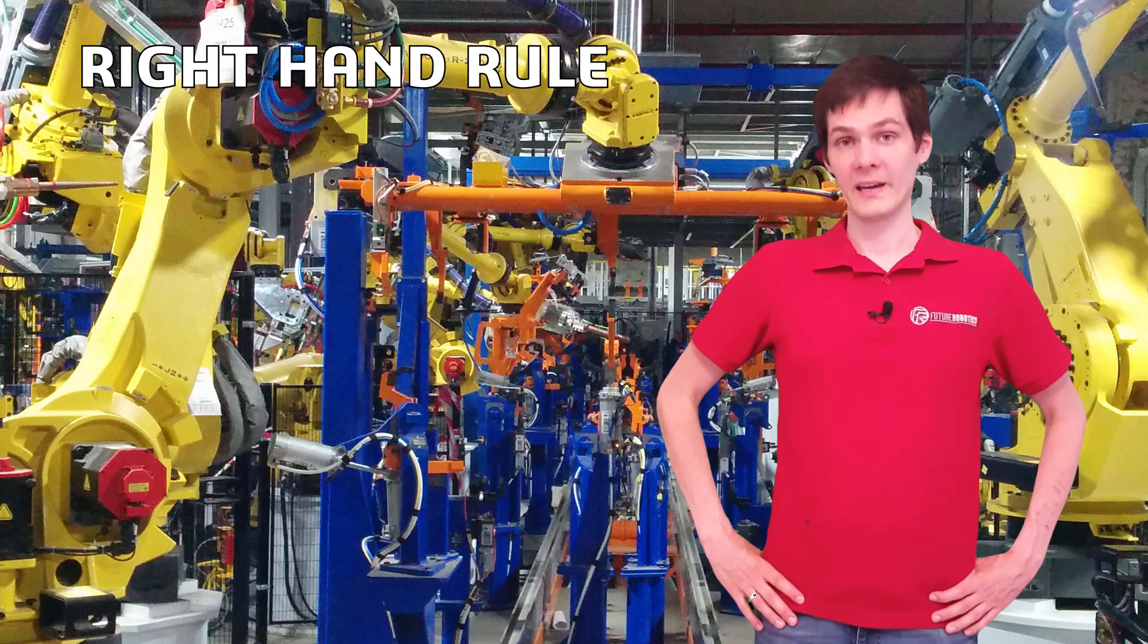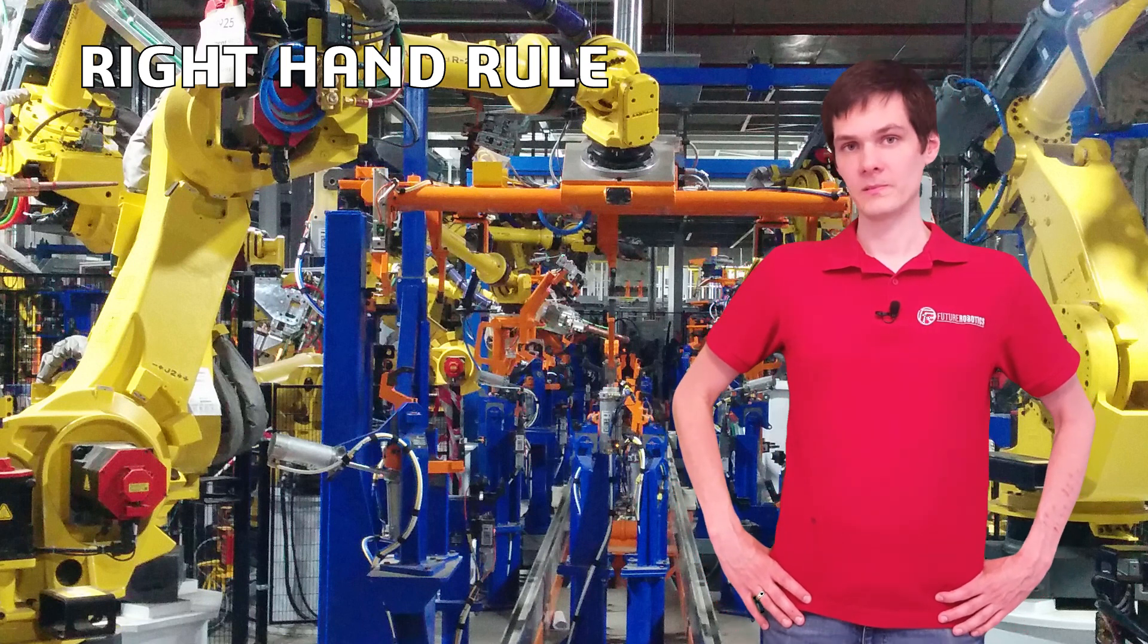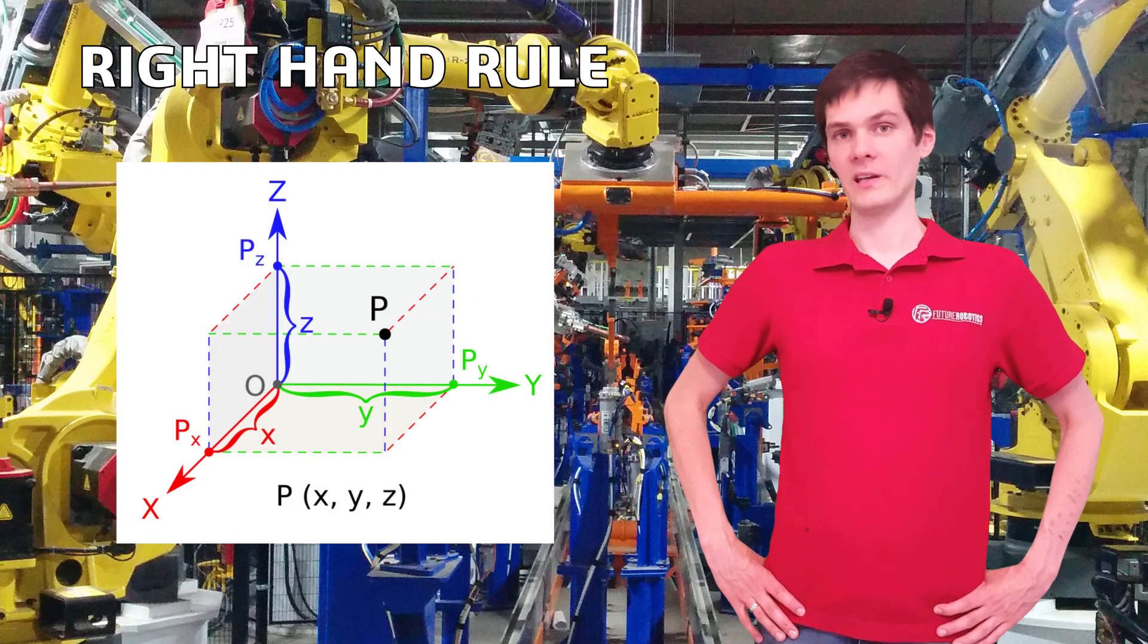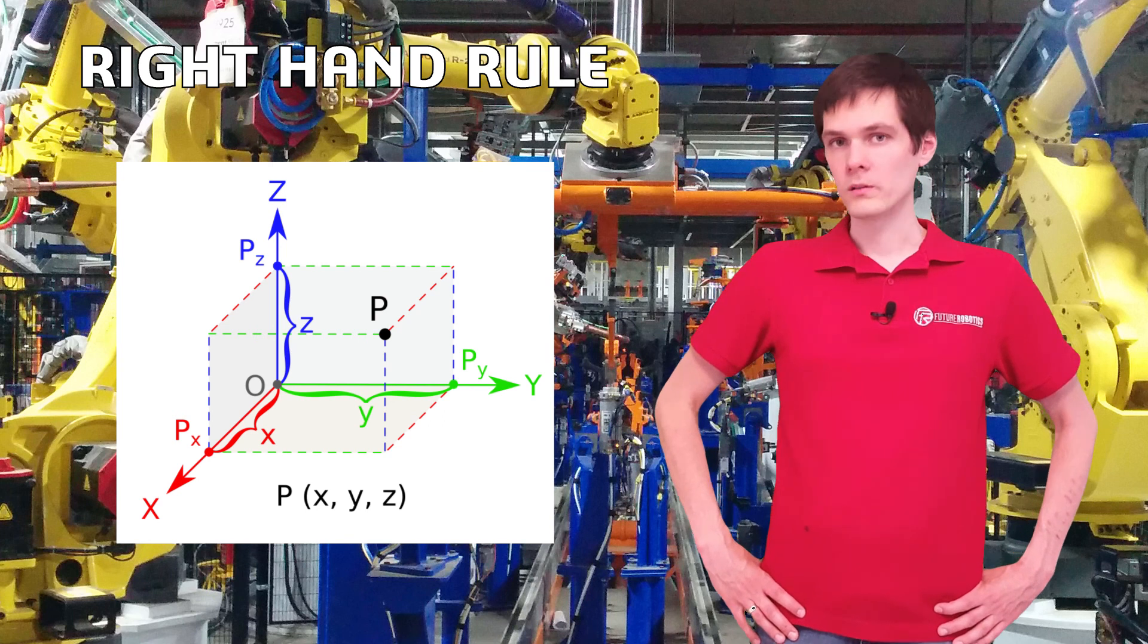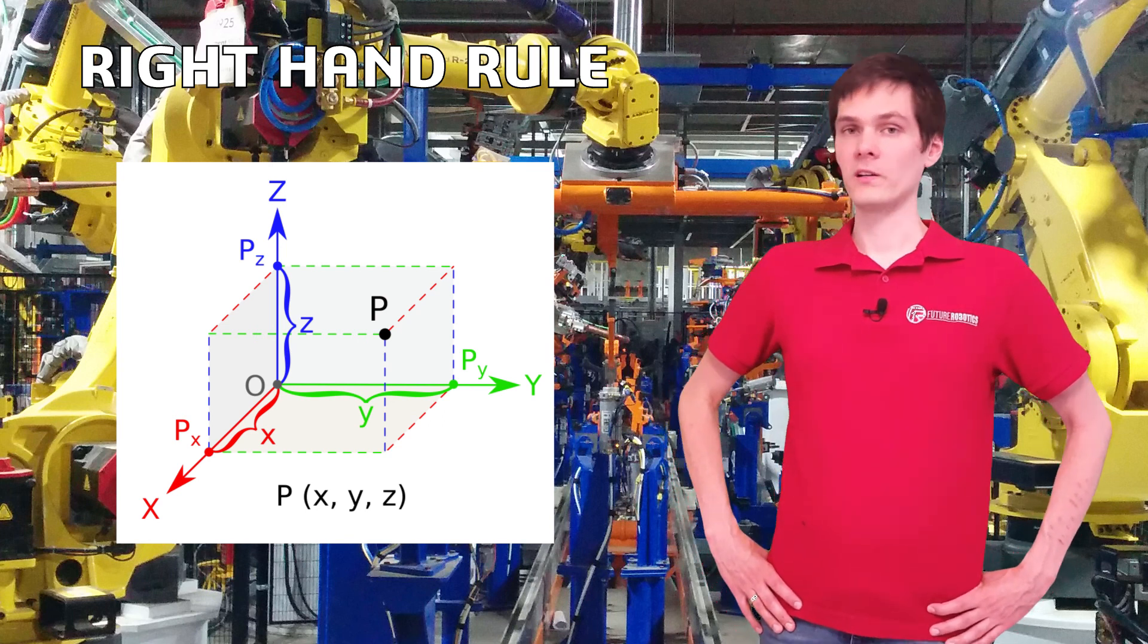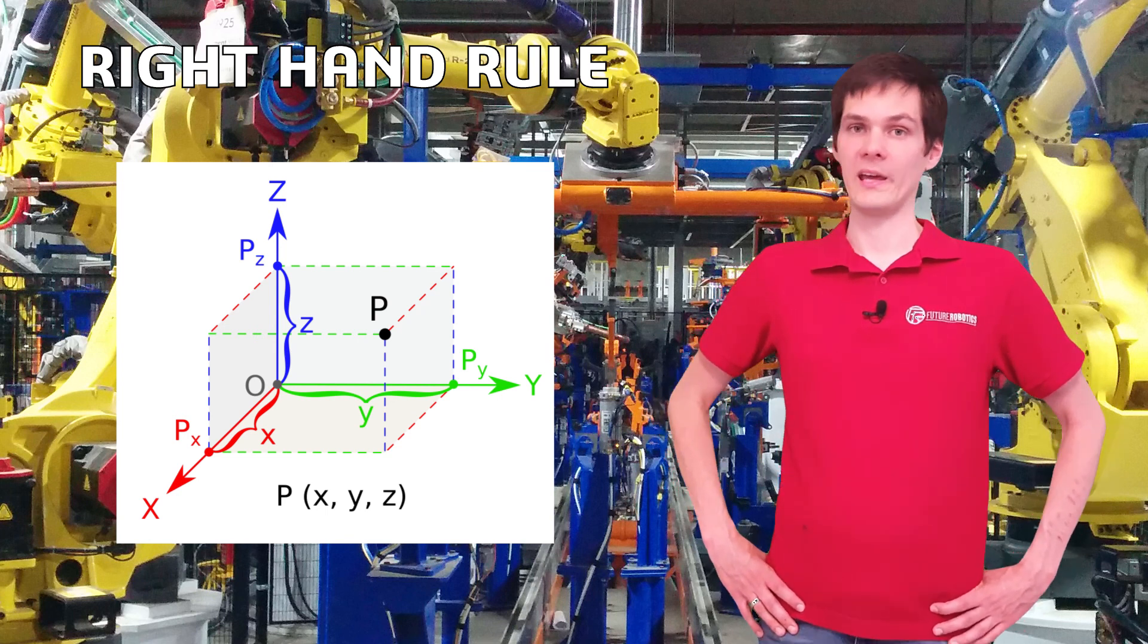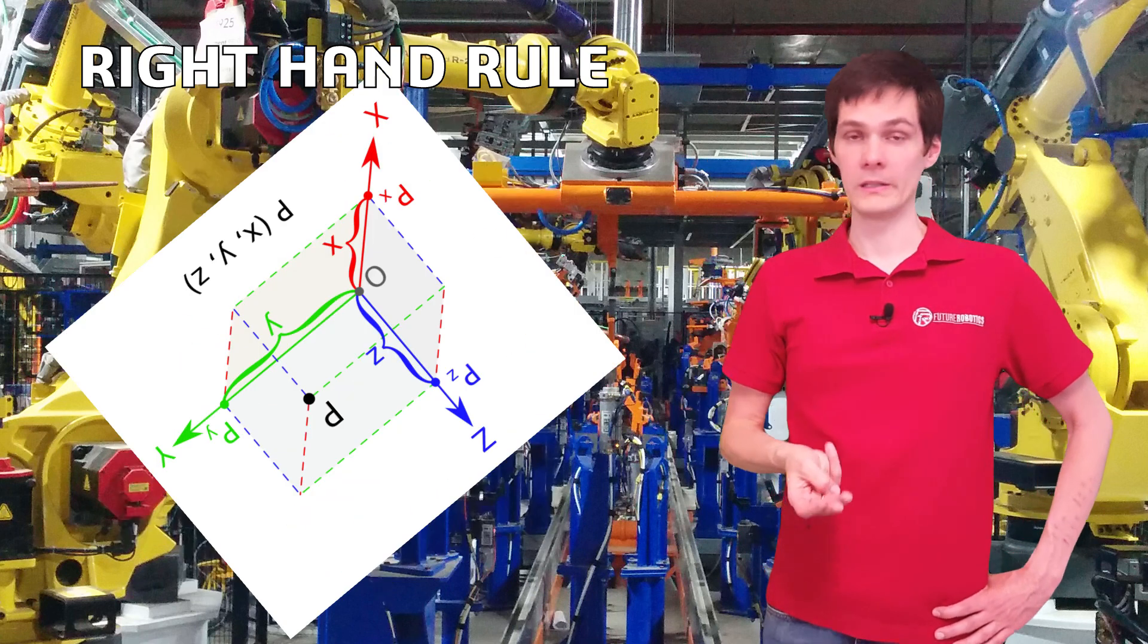So what do I mean by the right-hand rule? Remember the coordinate system we talked about a little bit earlier. It has the x, y and z axis. You're going to use your right hand to determine whether or not that position of the x axis is straight, left, up or in whatever else direction.